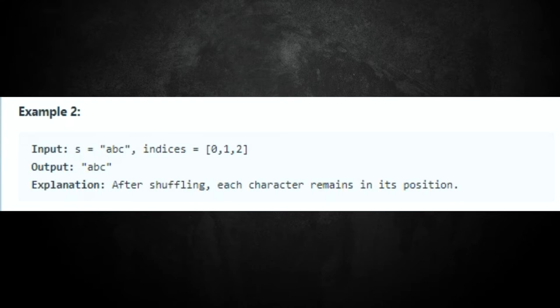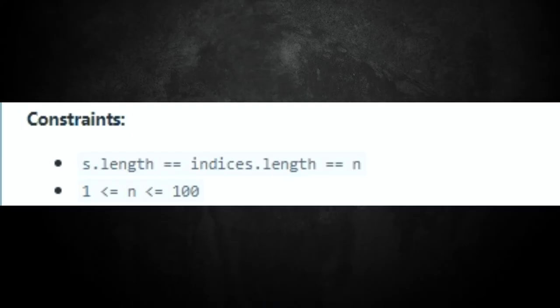Here are the constraints: S length equals indices length equals N, and N can be between one and 100, so we won't have a zero case — there has to be at least one character. Also, all values of indices are unique, which is very important. You can't have the same position for the same letter, so they match up to each other respectively. That's going to be pretty helpful.